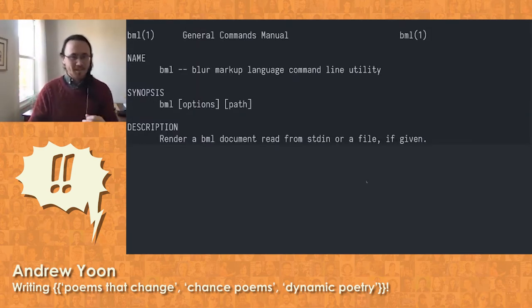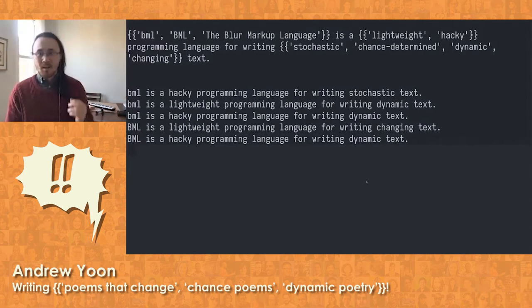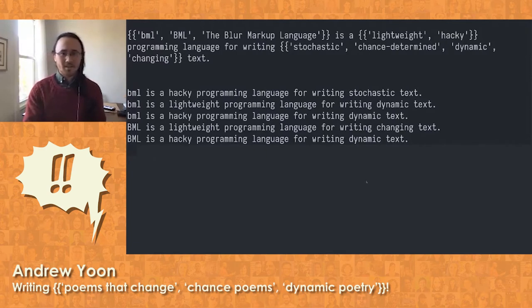So I made a thing. This thing is called BML or the blur markup language. It's a programming language for writing text that changes. Rather than writing exactly what you want people to read, you express the possibilities. And these are then chosen for you on demand.